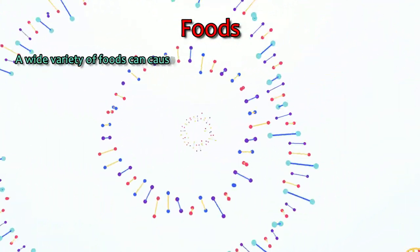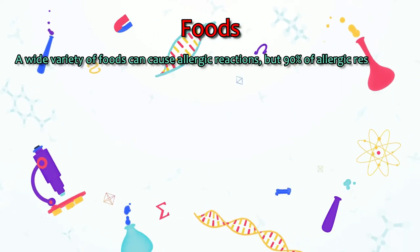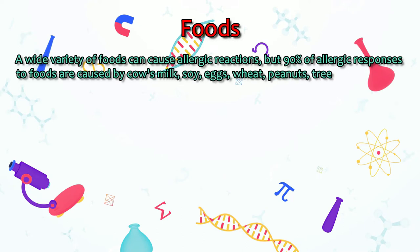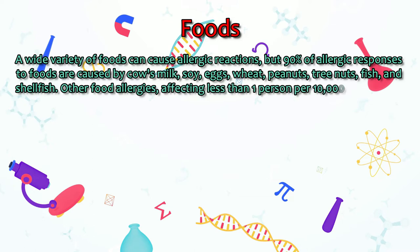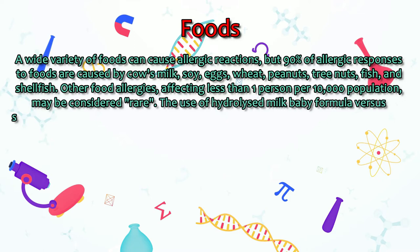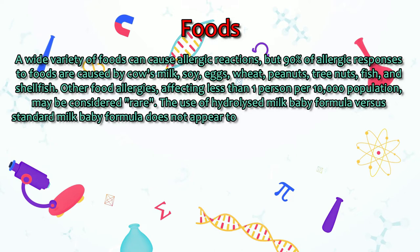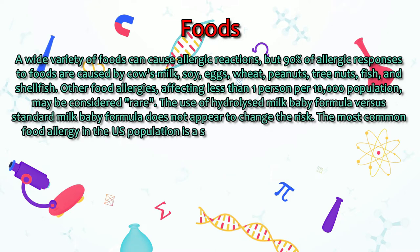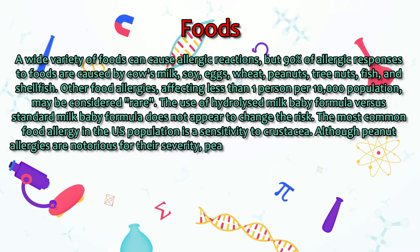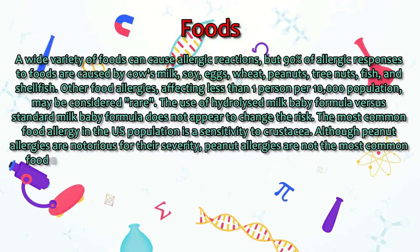A wide variety of foods can cause allergic reactions, but 90% of allergic responses to foods are caused by cow's milk, soy, eggs, wheat, peanuts, tree nuts, fish, and shellfish. Other food allergies affecting less than one person per 10,000 population may be considered rare. The most common food allergy in the U.S. population is a sensitivity to crustacea. Although peanut allergies are notorious for their severity, they are not the most common food allergy in adults or children.